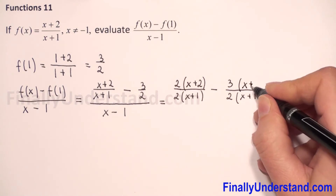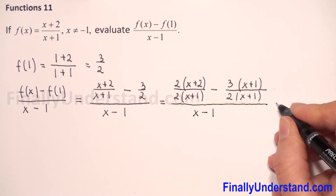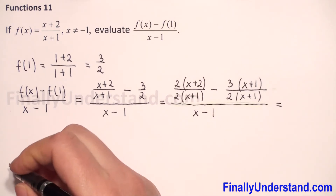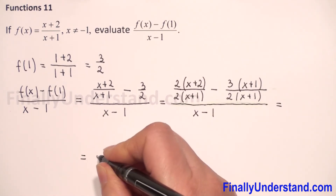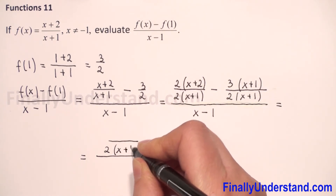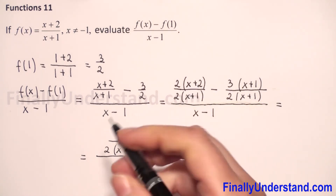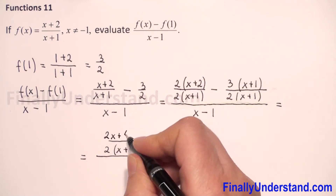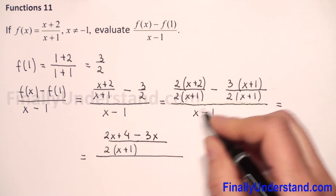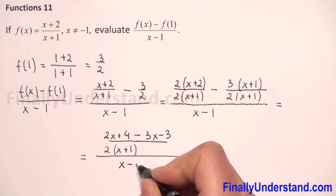And I have to multiply this numerator by the same as in the denominator, by x plus 1, over x minus 1. Because I have the same denominator I can subtract these two fractions. It will be the same denominator, 2 times x plus 1 in parenthesis. Multiplying 2 by the whole expression gives 2x plus 4 minus 3x minus 3. Everything is over x minus 1.